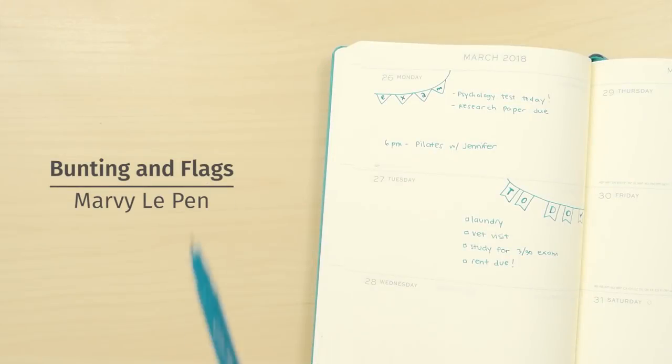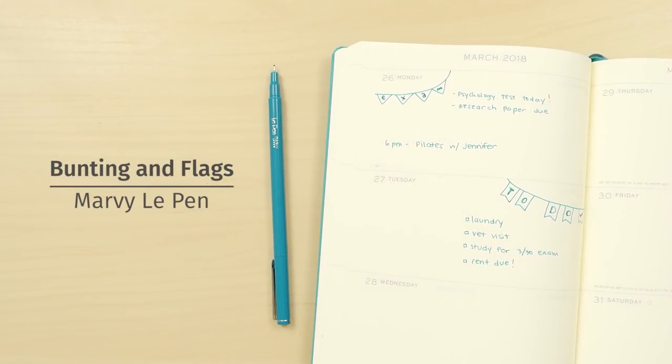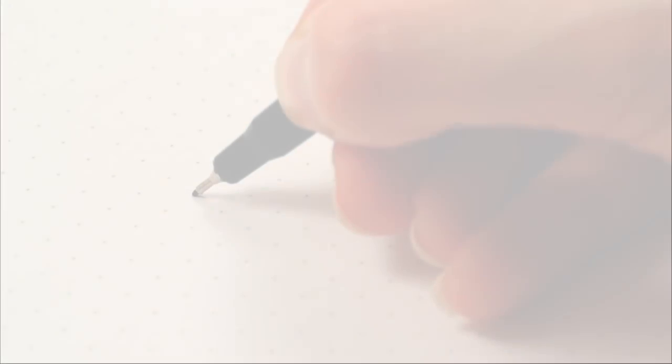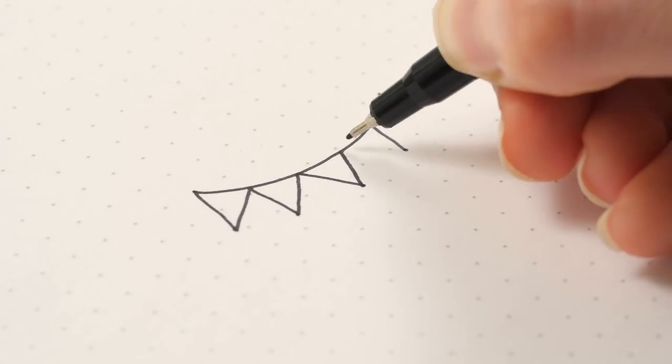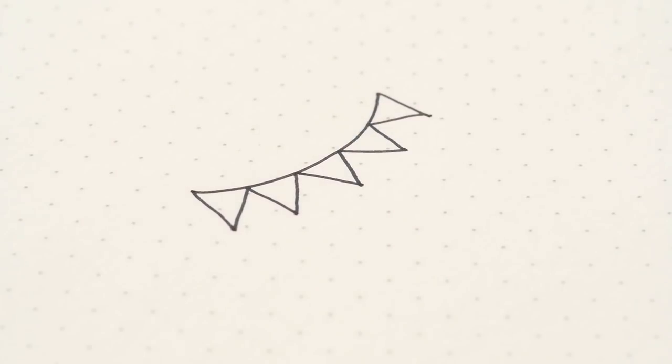Creating bunting and flags is an easy way to add a fun touch. Simply draw a curved line and add your flag of choice along the line. You can do regular flags, triangle flags, or semi-circle flags.